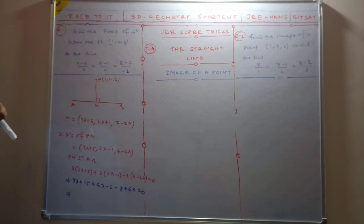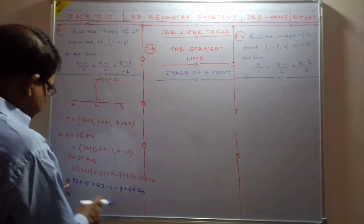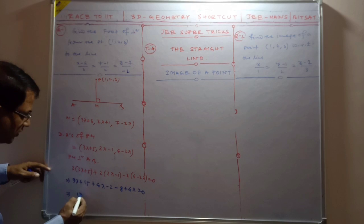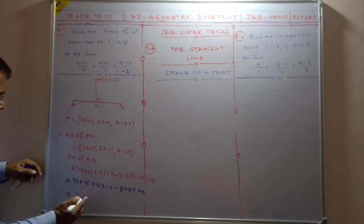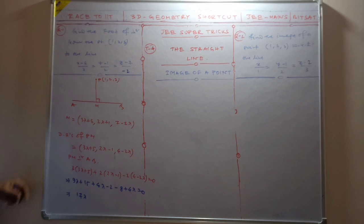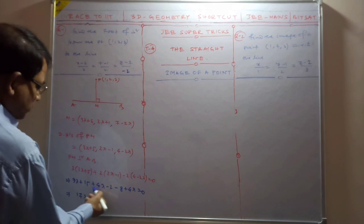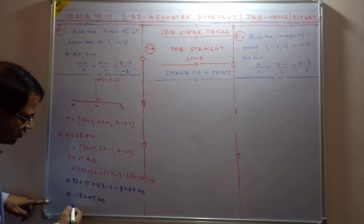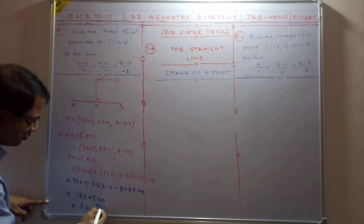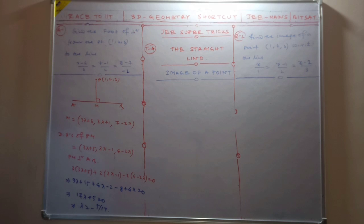This gives us 17 lambda plus 5 equals zero. So lambda value is minus 5 by 17.